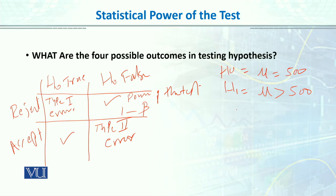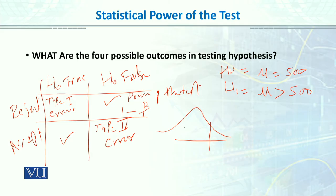We have made a one-tail directional hypothesis because the company's claim is that activity is increased. So we draw the distribution and mark the critical value. For a one-tail test at 95% confidence, the z critical value is 1.96.